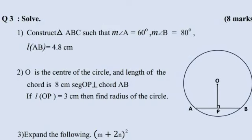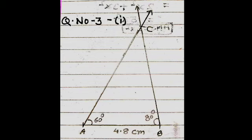Question number 3. First: construct triangle ABC such that measure of angle A is 60 degrees, measure of angle B is 80 degrees, and length AB is equal to 4.8 cm. First, draw length AB of 4.8 cm. After that, draw angle A of 60 degrees, then draw angle B of 80 degrees. Join points B and C, A and C, and complete the triangle.